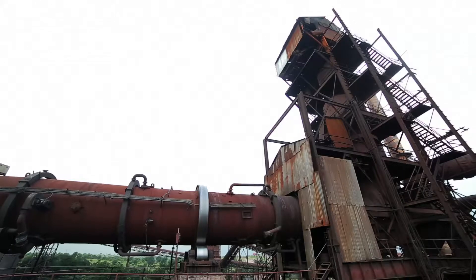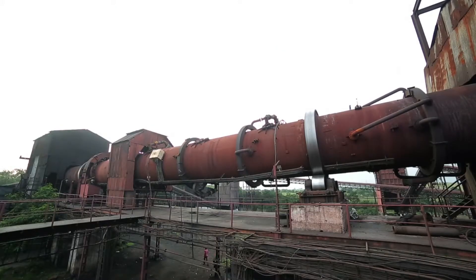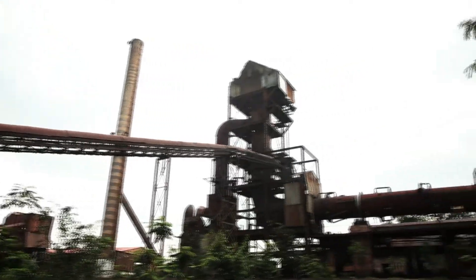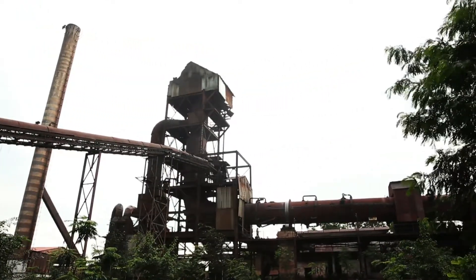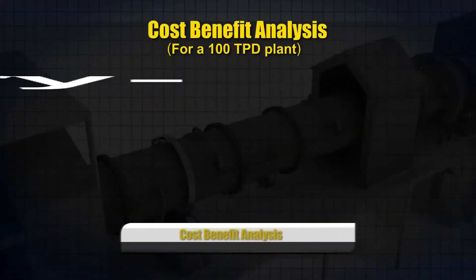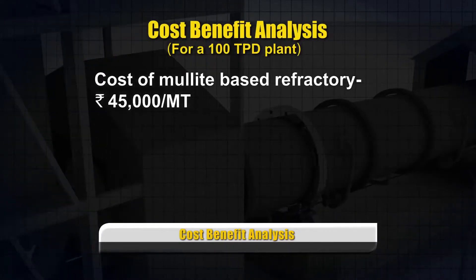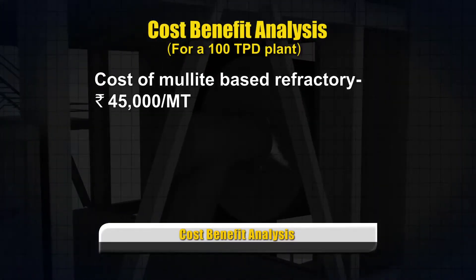The above replacement of refractories can be done during scheduled overhauling of the plant. The technology is applicable in all capacities of plant. Mullite based refractory typically costs 45,000 rupees per metric tonne.